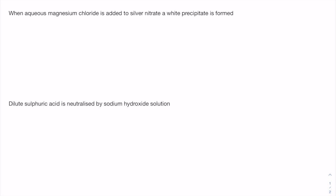Okay, so in today's quick walkthrough we're going to look at two questions. First one is when magnesium chloride is added to silver nitrate a white precipitate has formed, so we're going to start off by writing out the full equation for this.